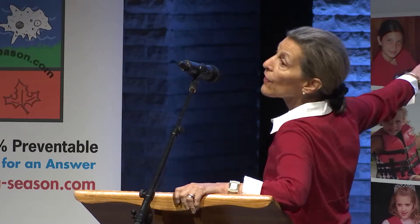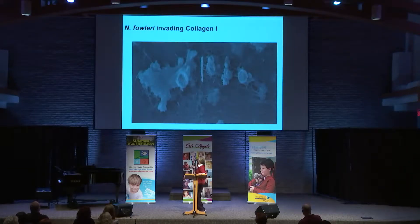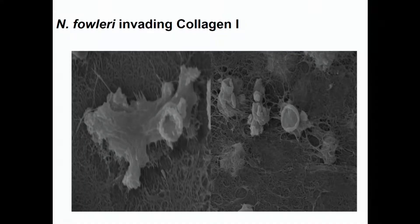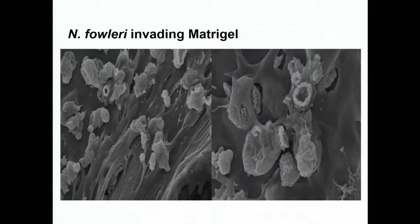This scanning electron micrograph shows a collagen matrix with the amoeba sitting on top. It has to break through somehow — it pushes its way through and also secretes proteases, specifically collagenases, that break down the collagen. Here the amoeba comes through the collagen. In another example with matrigel, the amoeba sit on top, secrete proteases, and break down the matrigel as they come through. Proteases play a critical role in invasion.